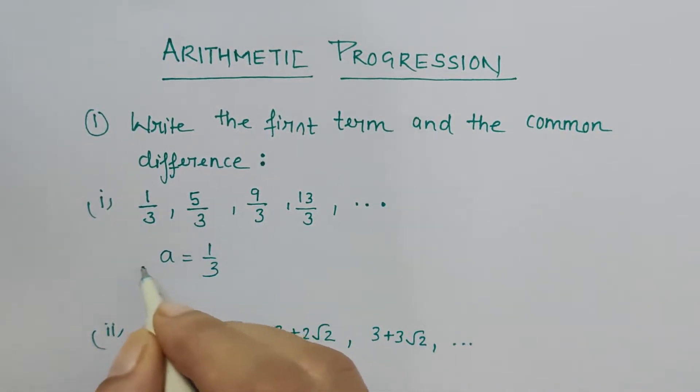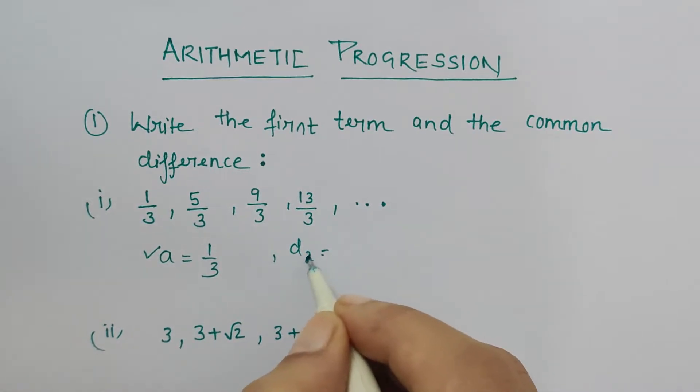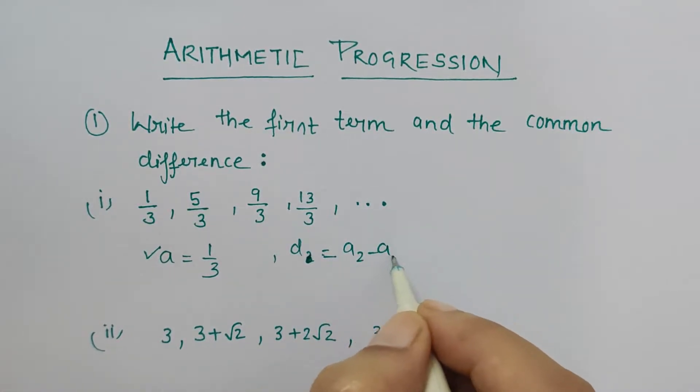Now common difference is nothing but a₂ minus a₁, second term minus first term, or third term minus second term, or fourth term minus third term. Whatever difference of the successive term from its preceding term you get is the common difference.